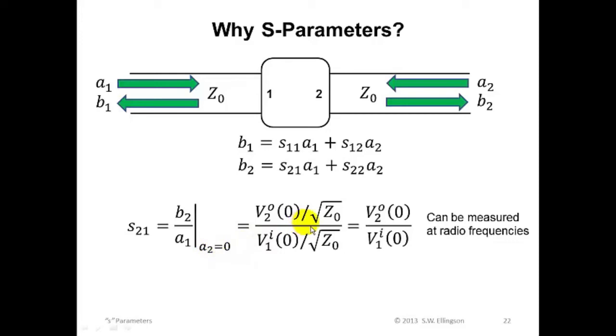that S21 then is the ratio of the outbound voltage wave from port 2 to the inbound voltage wave at port 1. And it turns out this ratio is straightforward to measure at radio frequencies. Now, you might say, what do you mean by that? And that's hopefully what you'll learn in your lab component of this course. But if you're really interested in that, I'm happy to follow up. Just get with me separately.